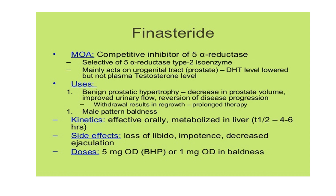The next drug is finasteride. As mentioned previously, testosterone is converted to the more active form dihydrotestosterone (DHT) with the help of the enzyme 5-alpha reductase. Finasteride blocks this enzyme — specifically the type 2 isoenzyme. So finasteride is a competitive inhibitor of 5-alpha reductase, which converts testosterone into the more active DHT responsible for androgenic activity in tissues including the prostate and hair follicles.